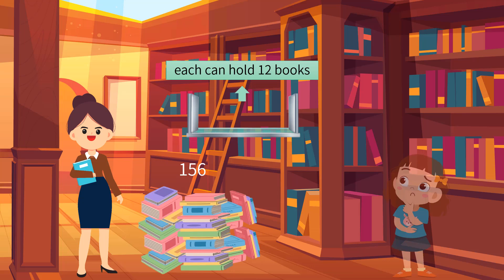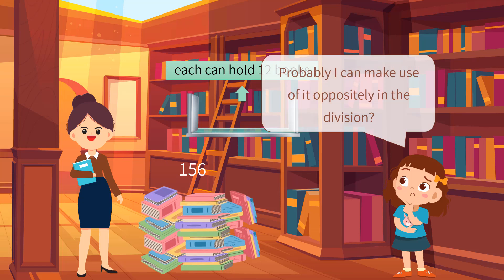Again, Abigail helped her calculate the number of bookcases to buy. Occasionally, she reflected on the area model she used to calculate the number of books the library used to have before. Maybe I can make use of it oppositely in the division, she wondered.